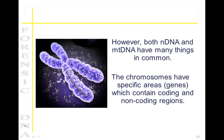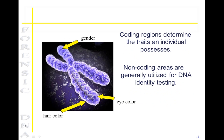Mitochondrial DNA and nuclear DNA have several things in common. The chromosomes have specific areas which contain coding and non-coding regions. The coding regions determine the traits for an individual, such as their gender, hair color, eye color, and different characteristics. Non-coding areas are generally utilized for DNA testing.